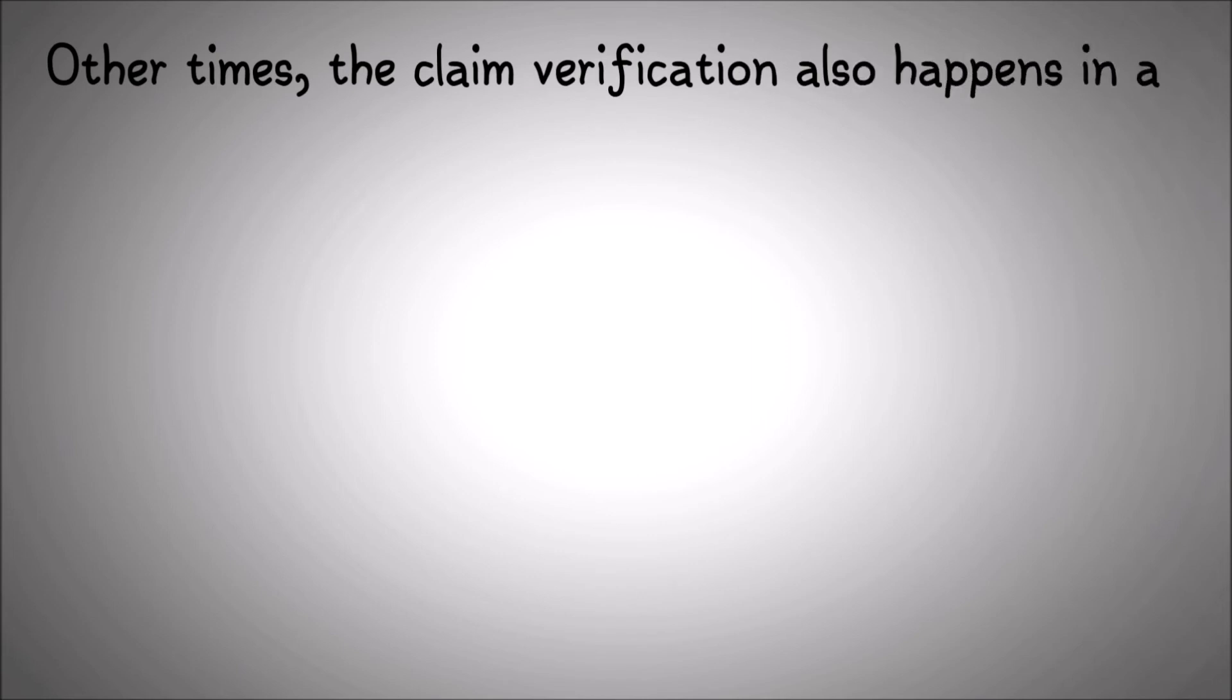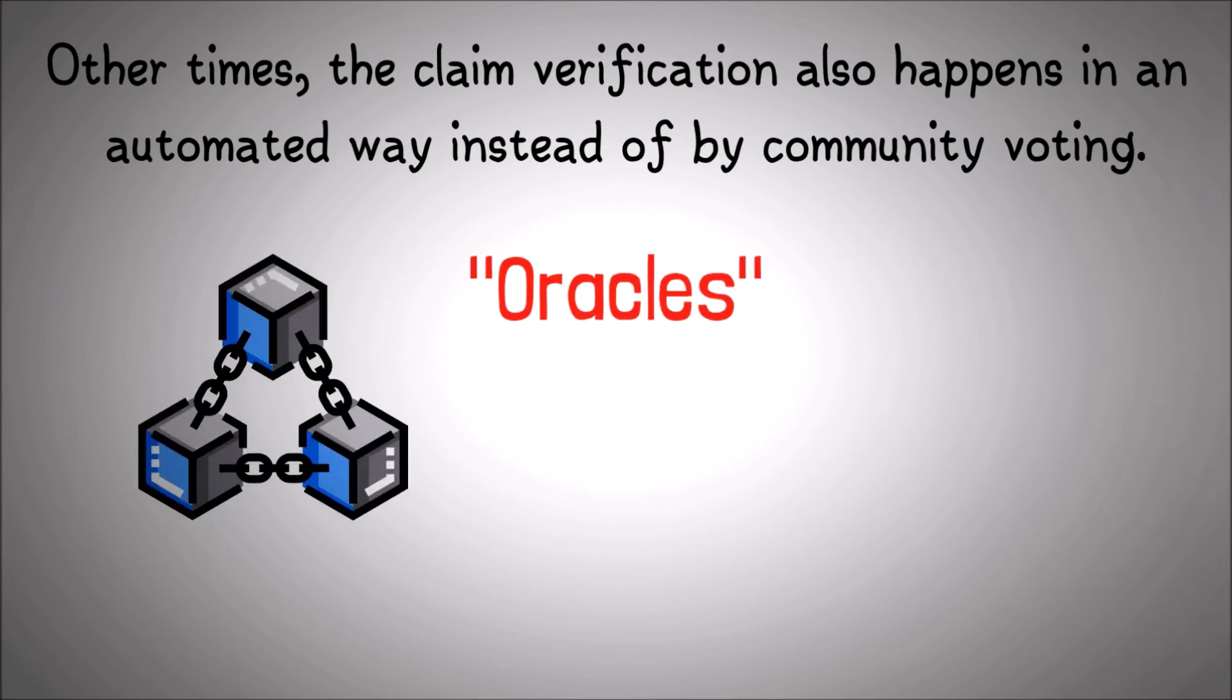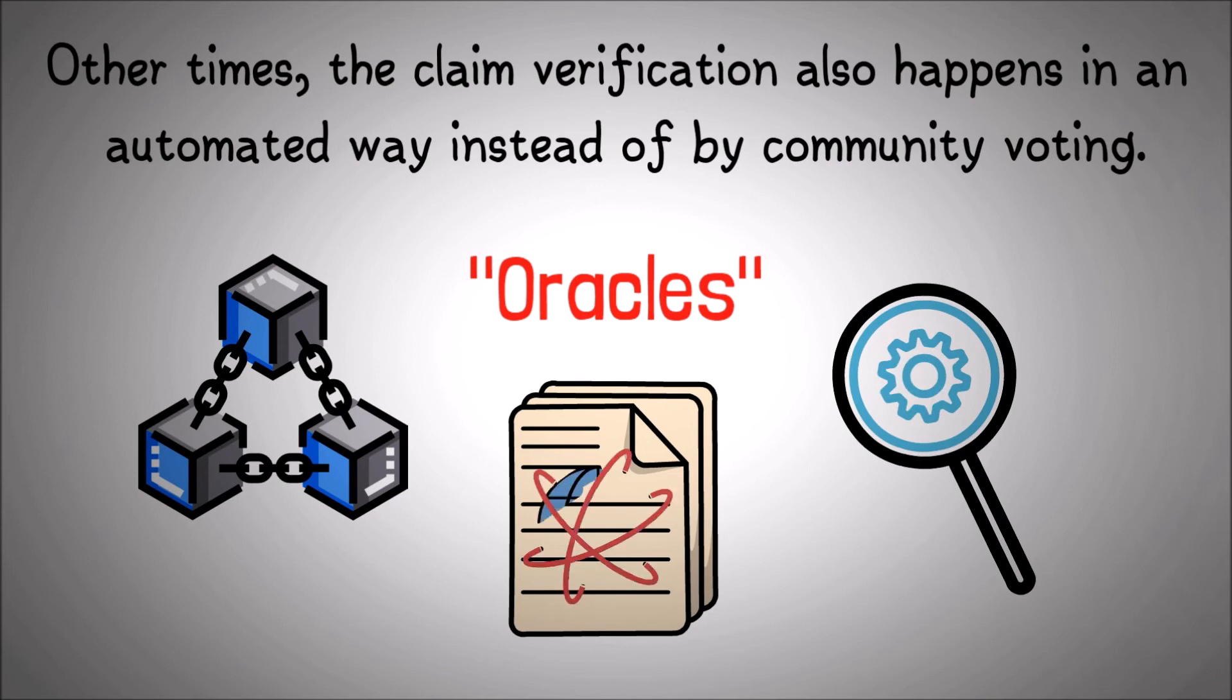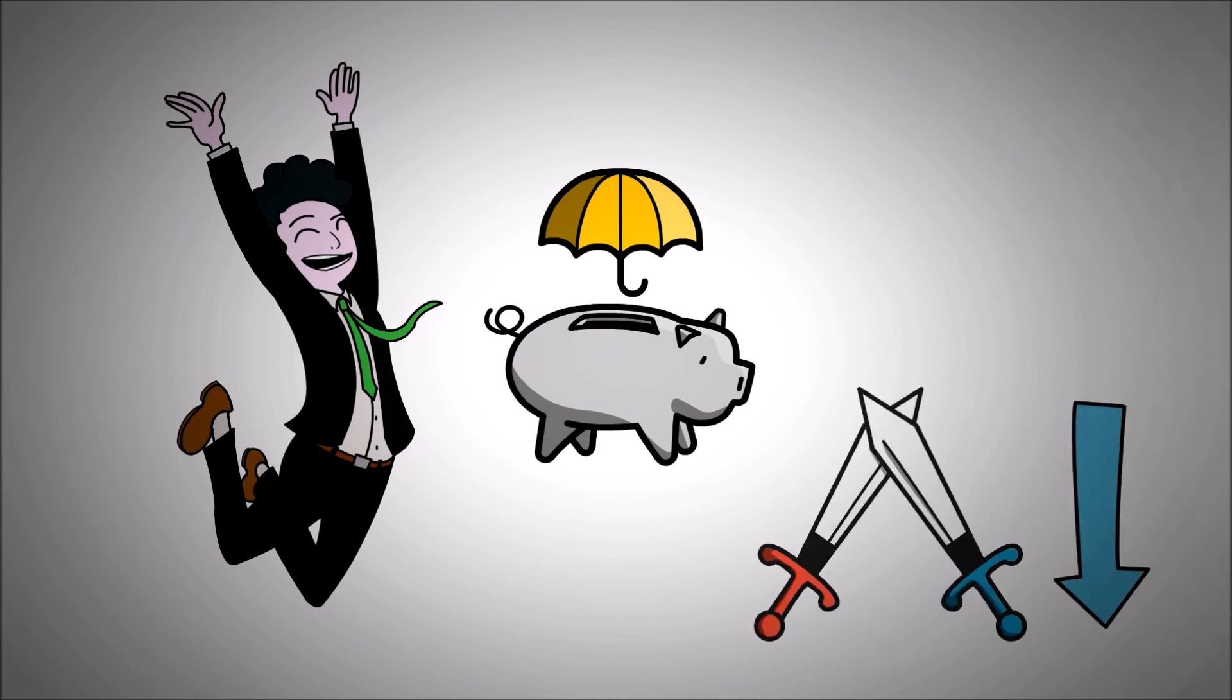Other times, the claim verification also happens in an automated way instead of by community voting. This is often done with the help of so-called oracles. Simply put, oracles are decentralized information mechanisms that verify external data. Oracles can be set up to accurately track the outcome of certain events and distribute this information across the internet. This can be useful for DeFi insurance protocols as chances of dispute will be minimized.